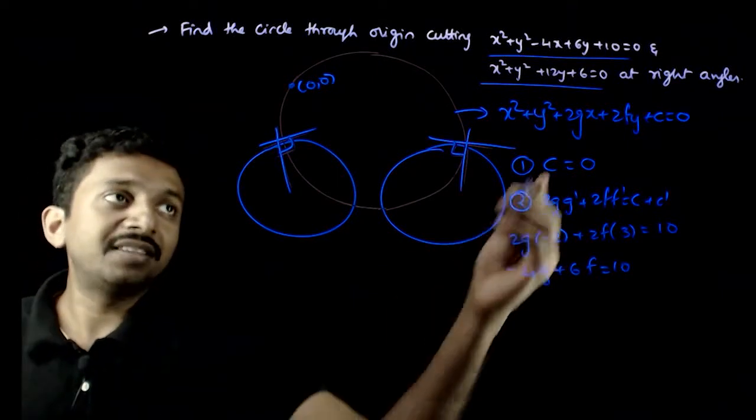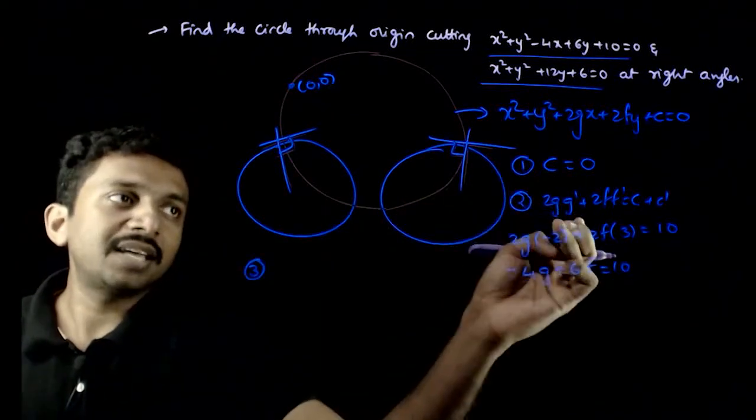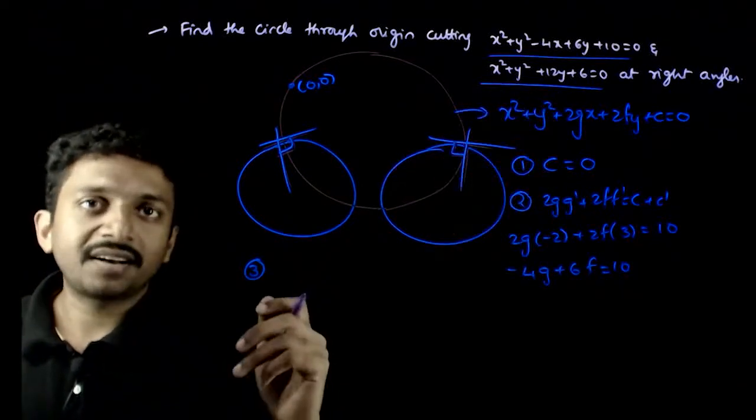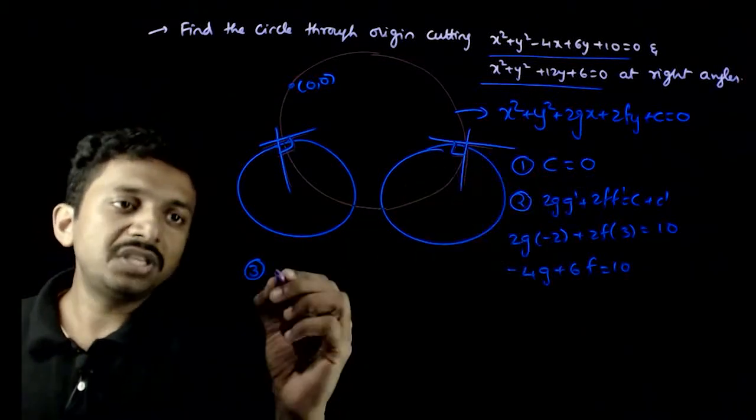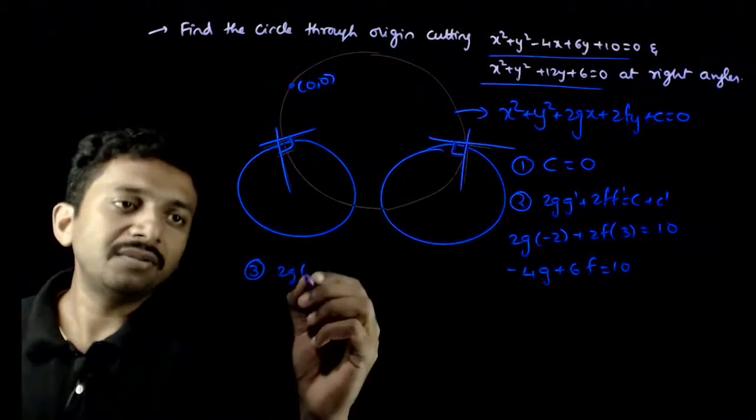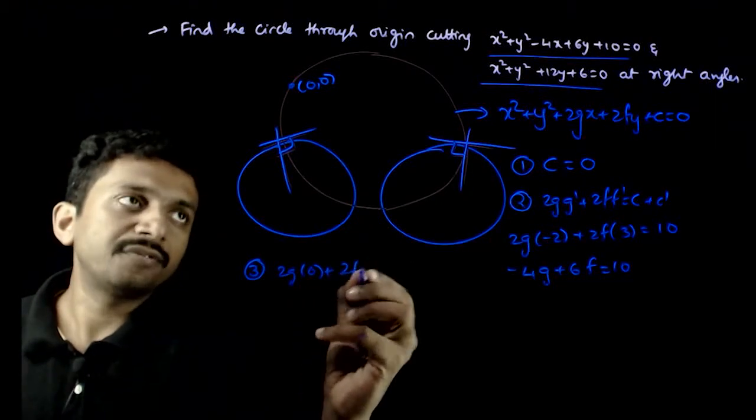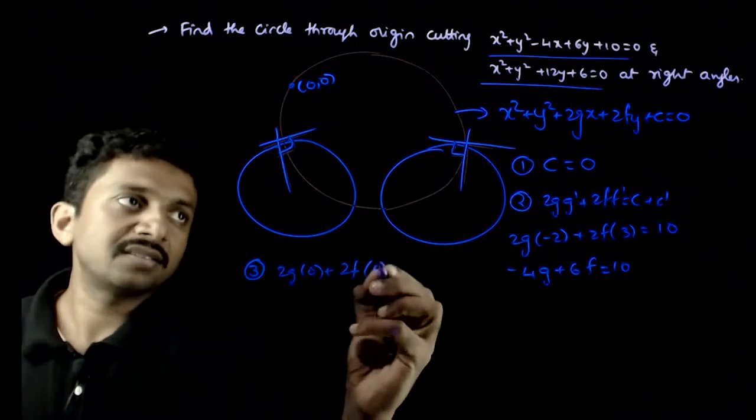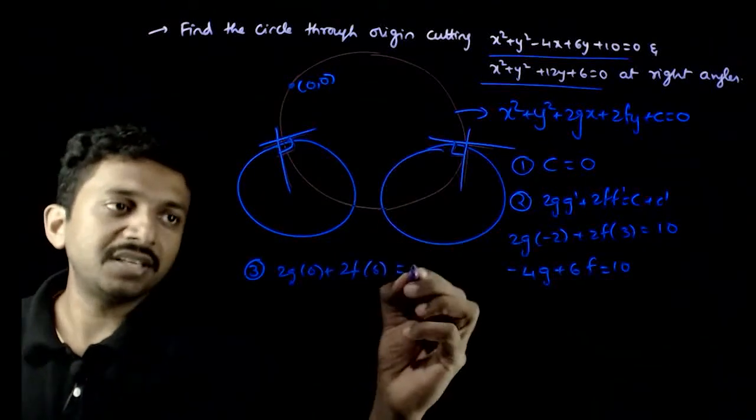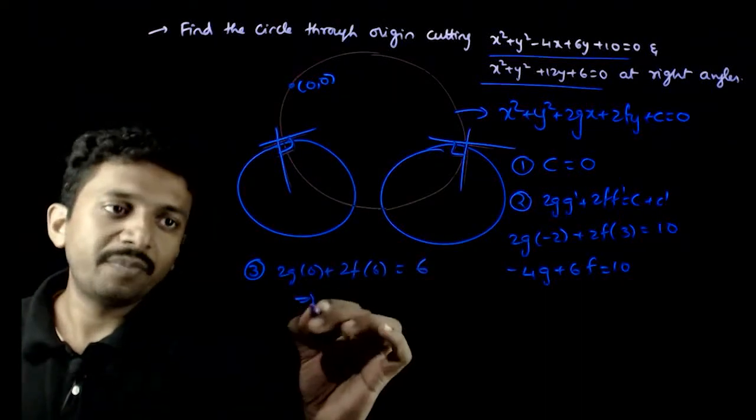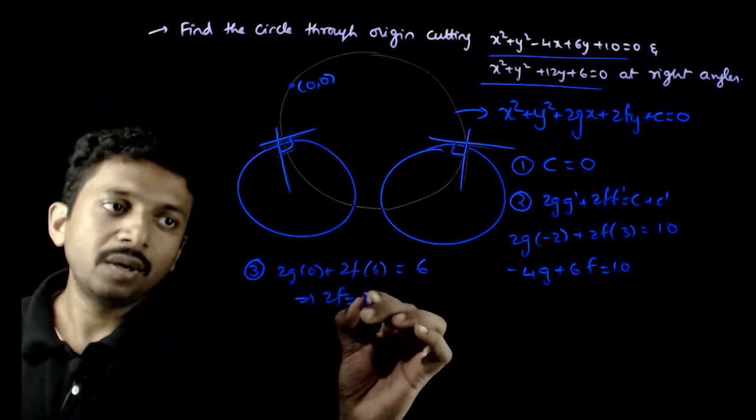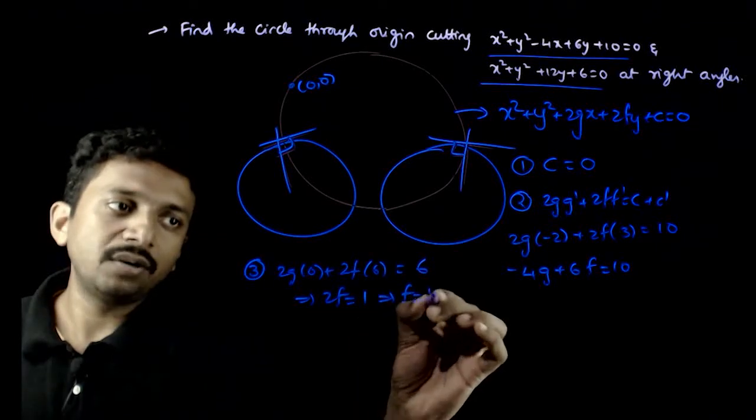Now, let us get the third condition. This circle and the second circle are orthogonal. So, again, 2g into g dash is 0 plus 2f into f dash is 6 is equal to c is equal to 0 plus c dash is equal to 6. This implies 12f is equal to 6. So, f is equal to 1 by 2.